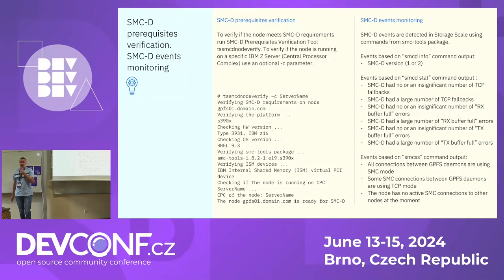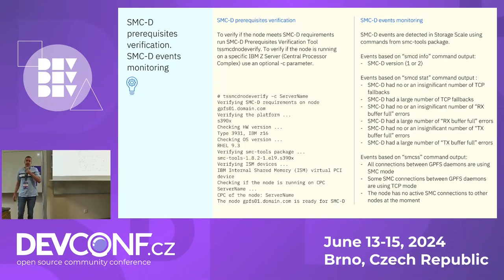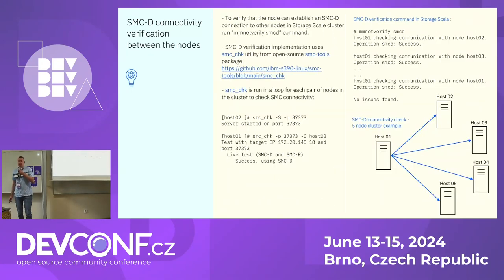The scripts check prerequisites such as operating system version, hardware version, installed packages, and ISM device availability. On the right-hand side you can see SMCD events generated in the Storage Scale monitoring component system health. We parse output from different SMC tools commands and generate appropriate events — for example, if there are more than 10% SMC fallbacks, we generate a large number of TCP fallbacks event.